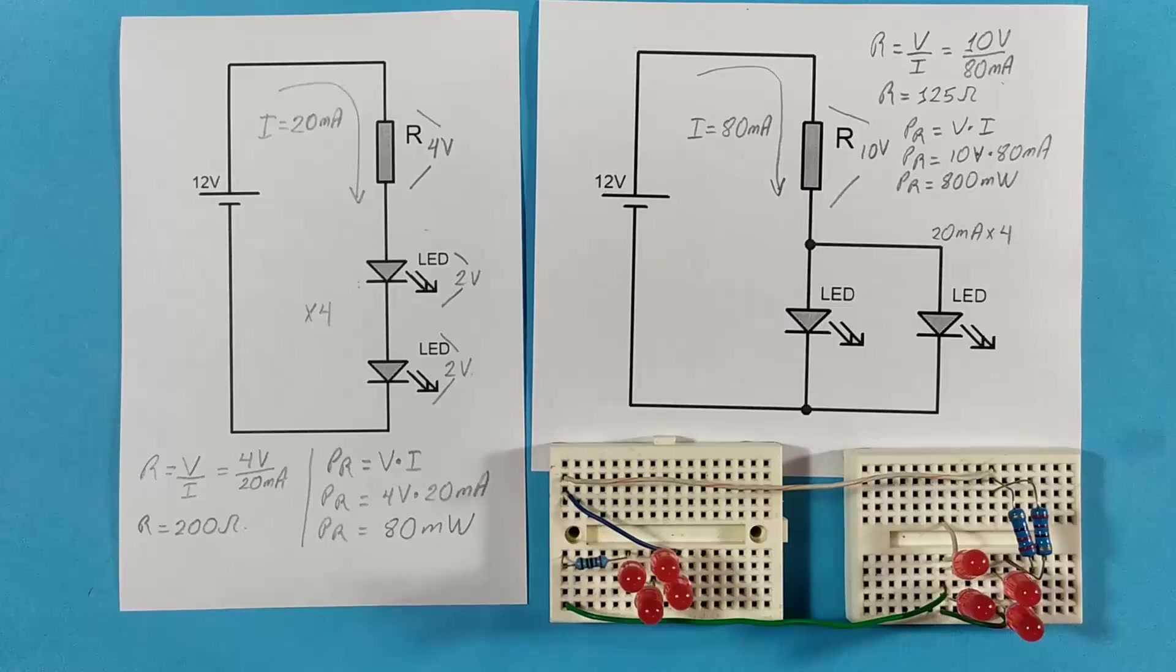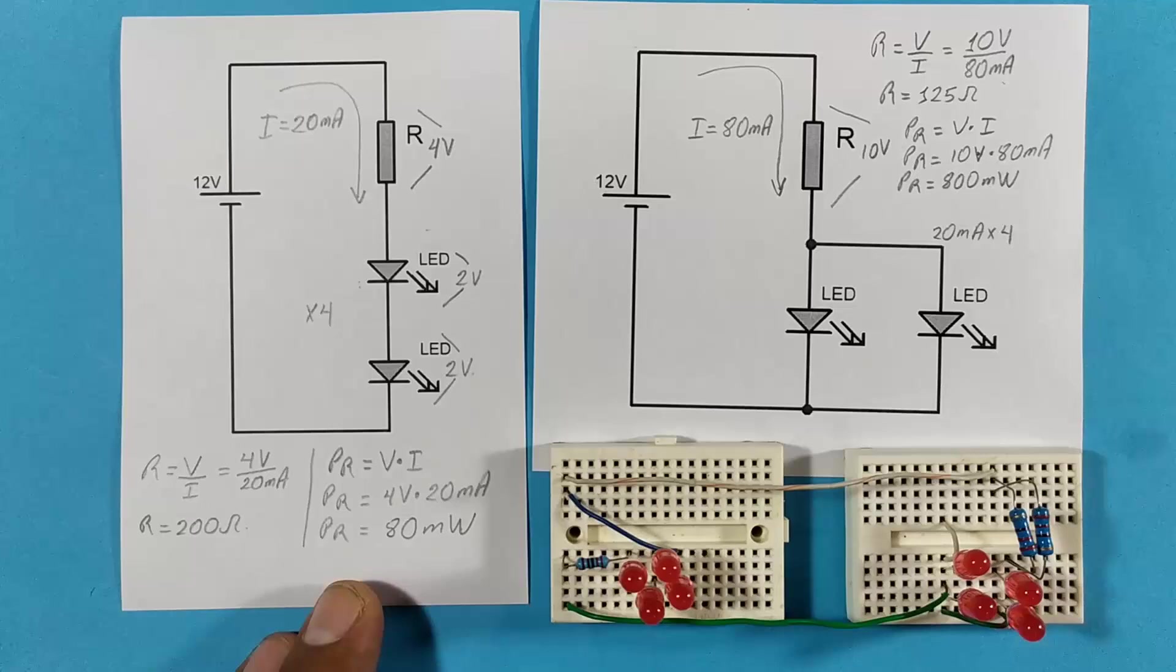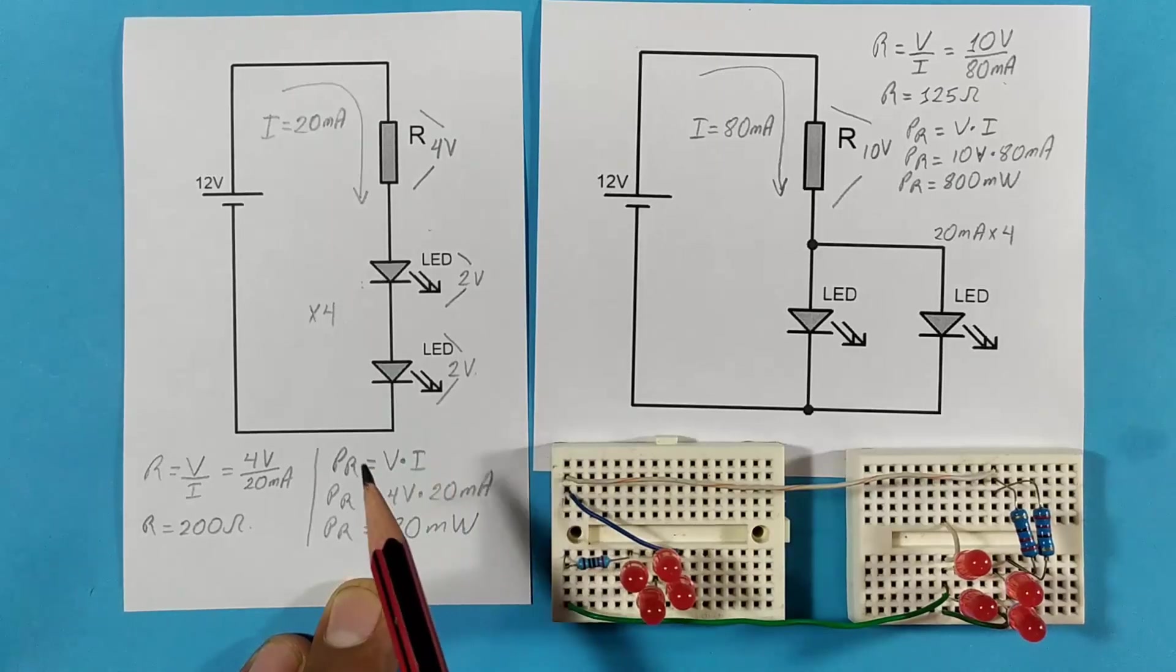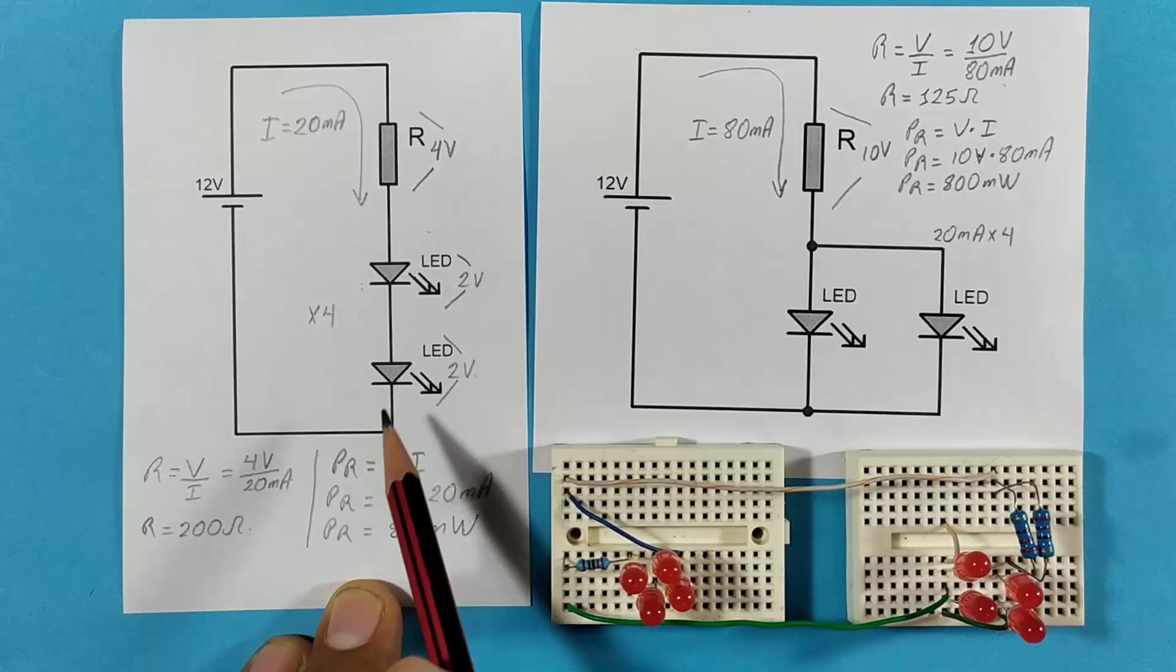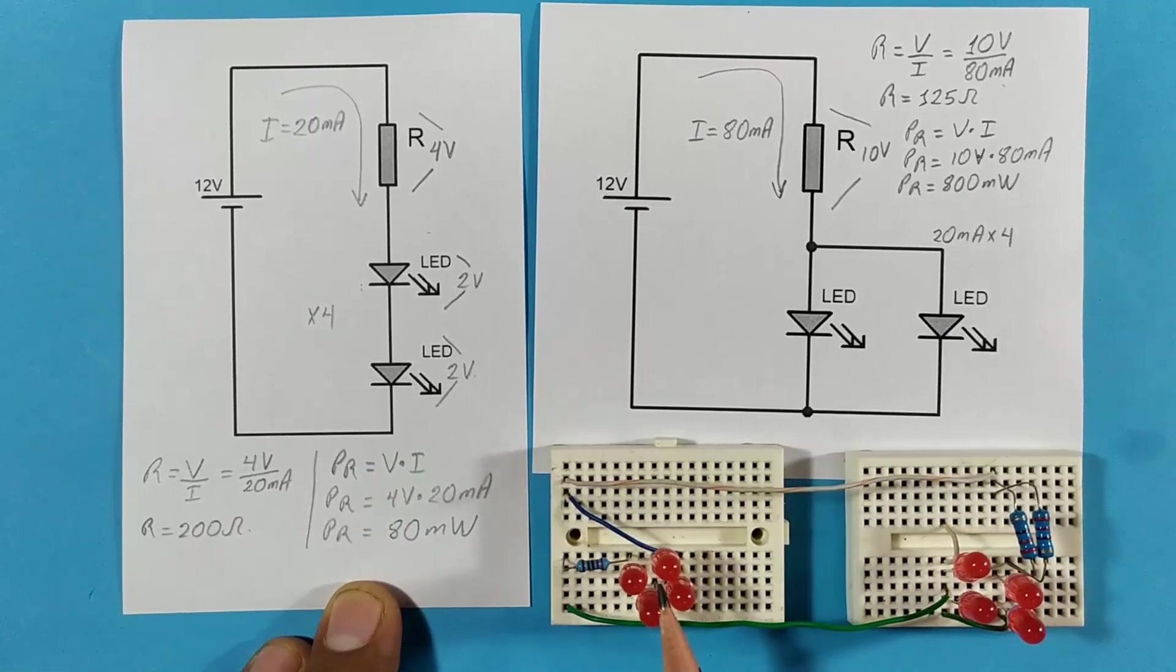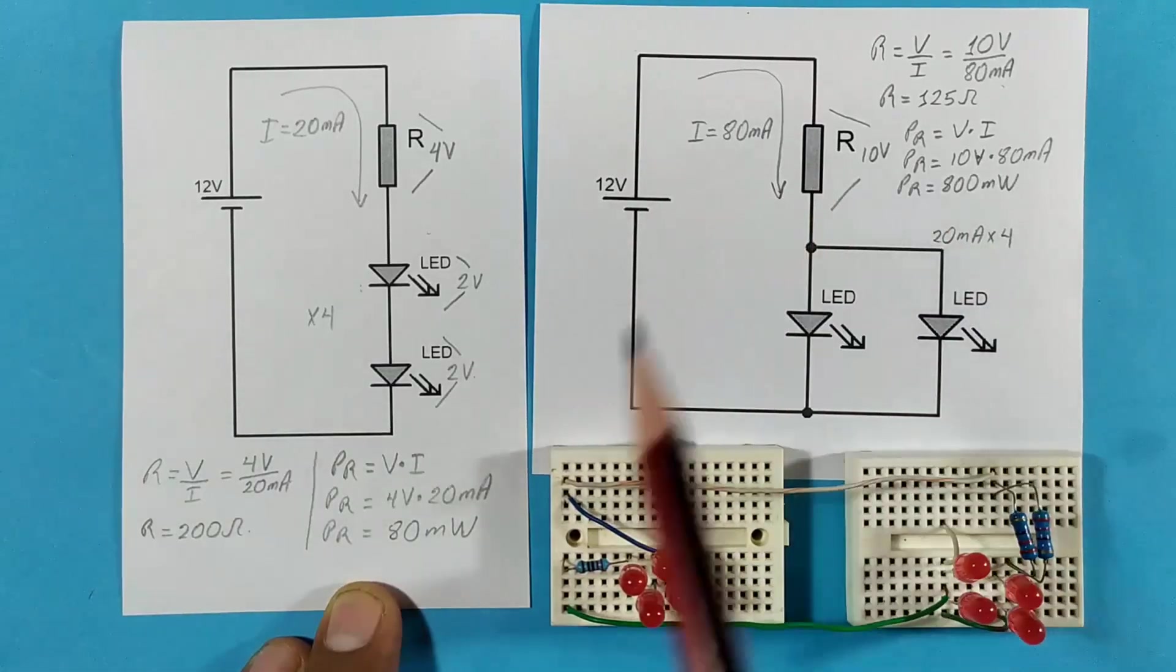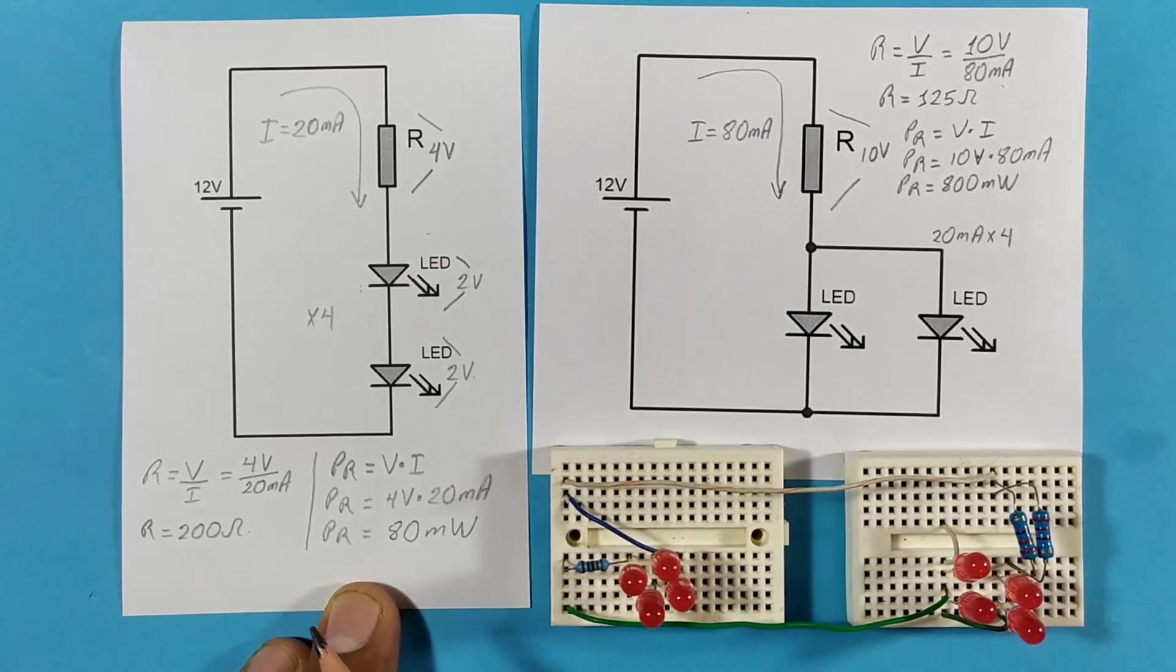Very well, guys. In this way, everything would be calculated based on the configuration of the connections of the LED diodes. On the left side, we would have 4 LEDs in series, these ones here. On the right side, we have them in parallel sharing a single resistor. Let's see the results, and based on that we have to draw our own conclusions to choose the most convenient circuit.